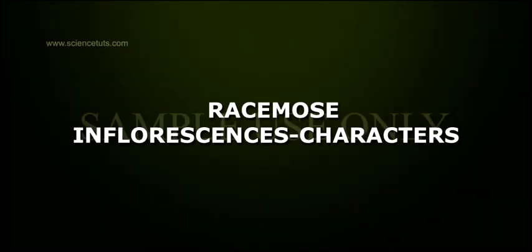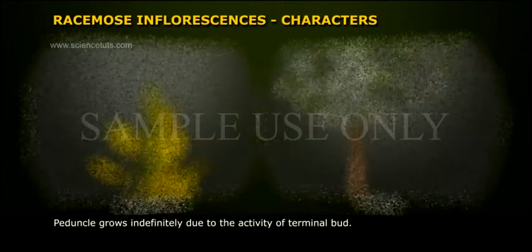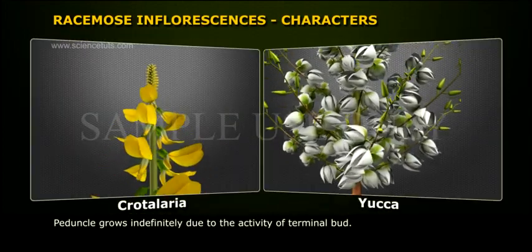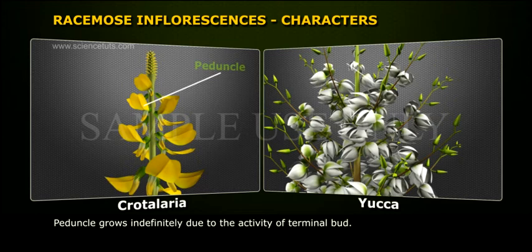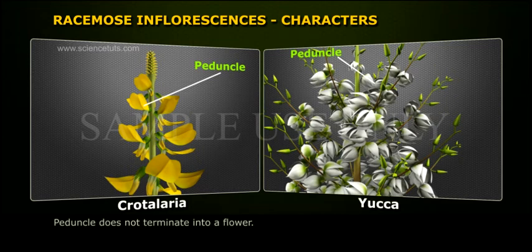Racimose Inflorescence Characters: The peduncle grows indefinitely due to the activity of the terminal bud, and it does not terminate into a flower.